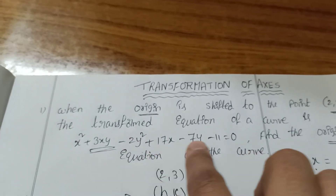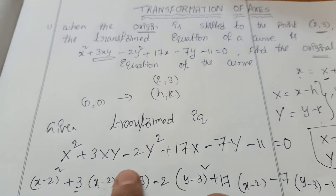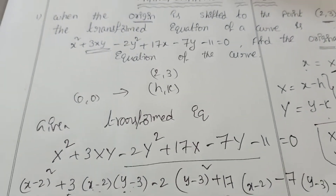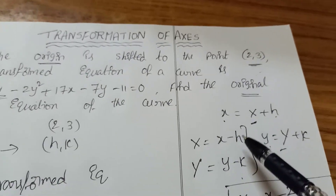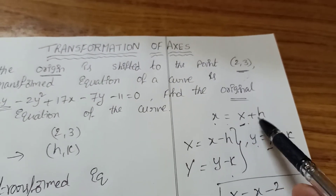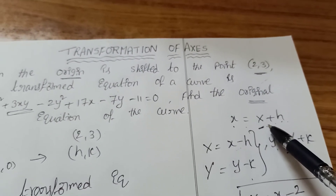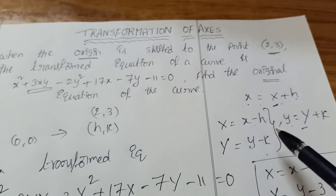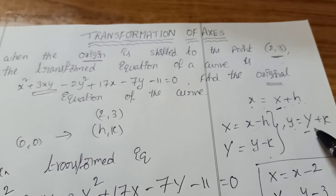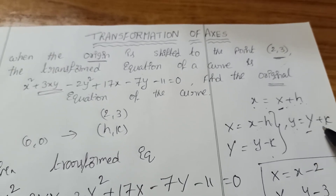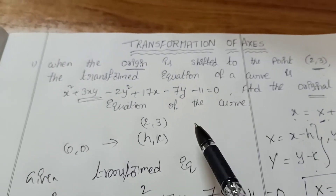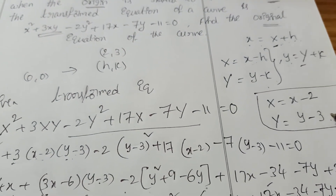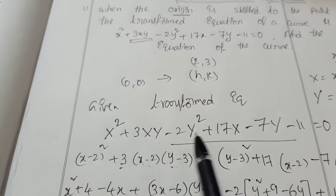To summarize: when the origin is shifted to H comma K, the transformed equation uses capital X and capital Y. Use the formulas — capital X equals x minus H and capital Y equals y minus K — then substitute H and K values and simplify to get the original equation.